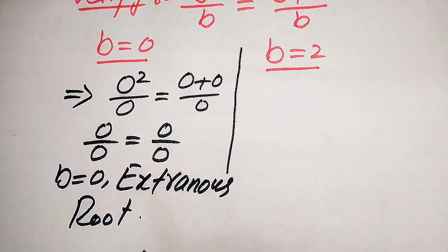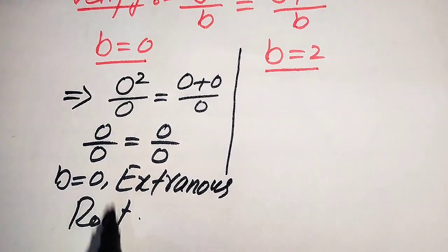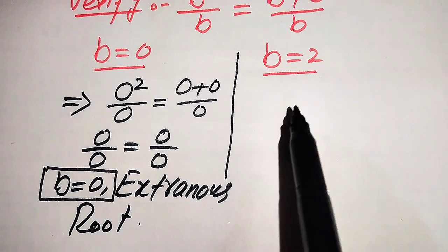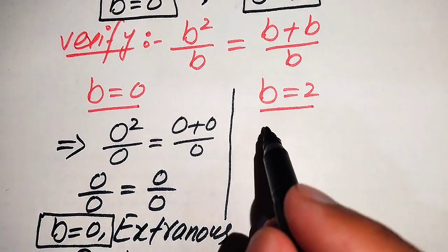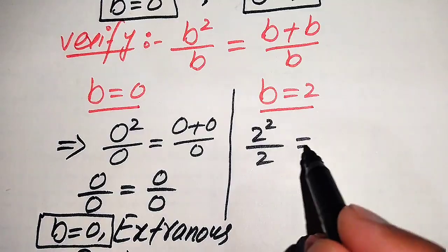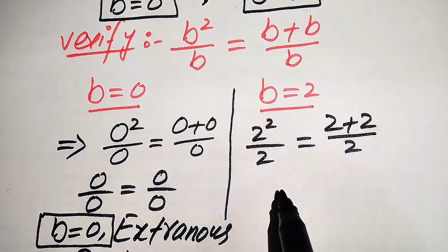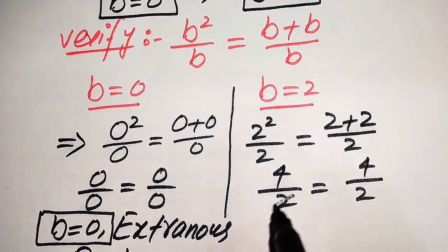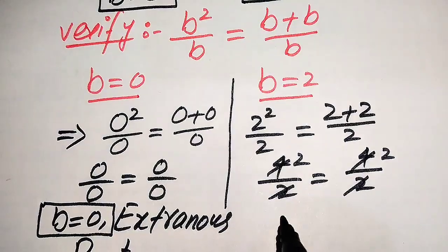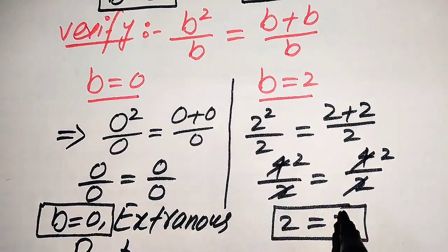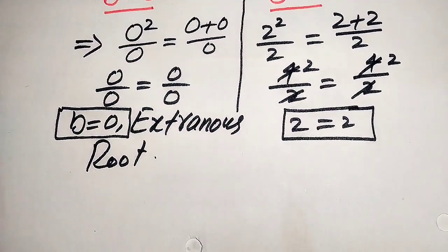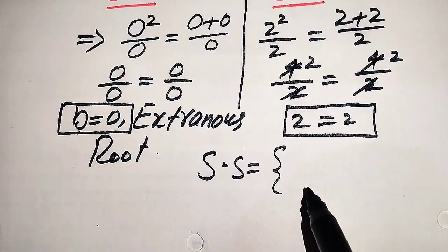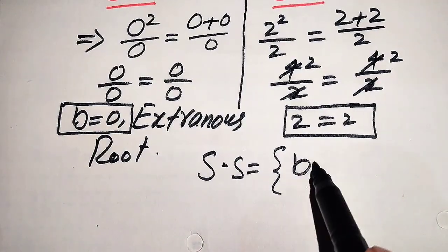Because both sides are undefined, b equals 0 does not satisfy the equation, so b equals 0 is an extraneous root. Now substituting b equals 2 on both sides: 2 squared divided by 2 equals 2 plus 2 divided by 2, which gives 4 divided by 2 equals 4 divided by 2, so 2 equals 2. This confirms that b equals 2 is the valid solution.